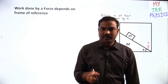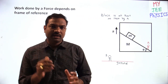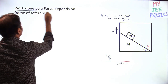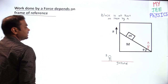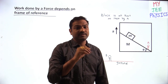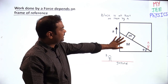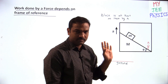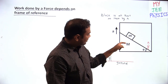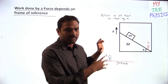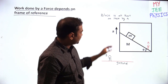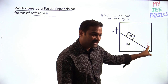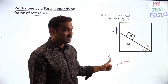The next important aspect is that work done by a force depends on the frame of reference from where you are observing. For example: inside a lift there is an inclined plane, and a block is kept on it. There are two observers — one observer A is inside the lift, and observer B is on the ground.